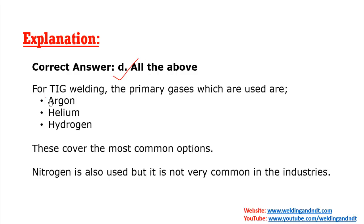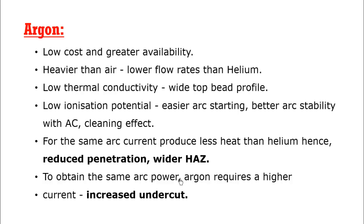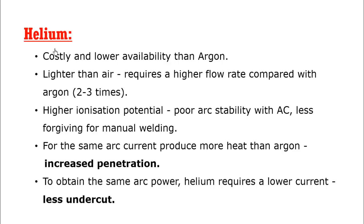The correct answer is all of the above. Primary gases are argon, helium, and hydrogen is also many times used. Nitrogen is also used in some conditions. As shown in this presentation slide, argon gives reduced penetration and wider HAZ, and due to argon, the chances of getting undercut will be increased. Whereas helium gives increased penetration and the chances of getting undercut are also very low.